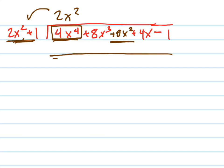Now I multiply. When I multiply 2x squared back through — remember, use parentheses — I'm going to put an extra space there because I know there's a missing x term. When I multiply it in, I get 4x to the 4th plus 0x cubed — because there's nothing there — plus 2x squared.